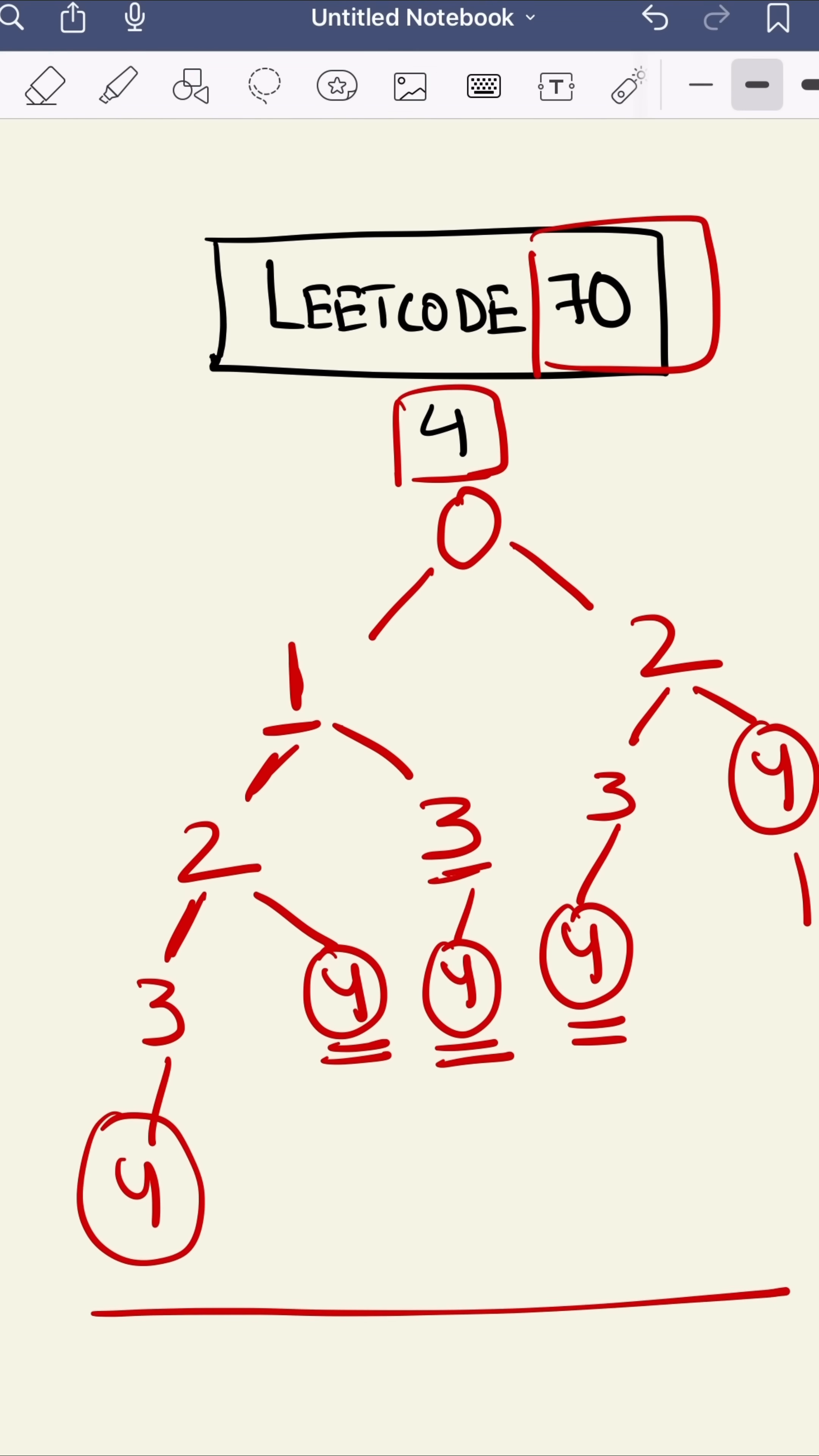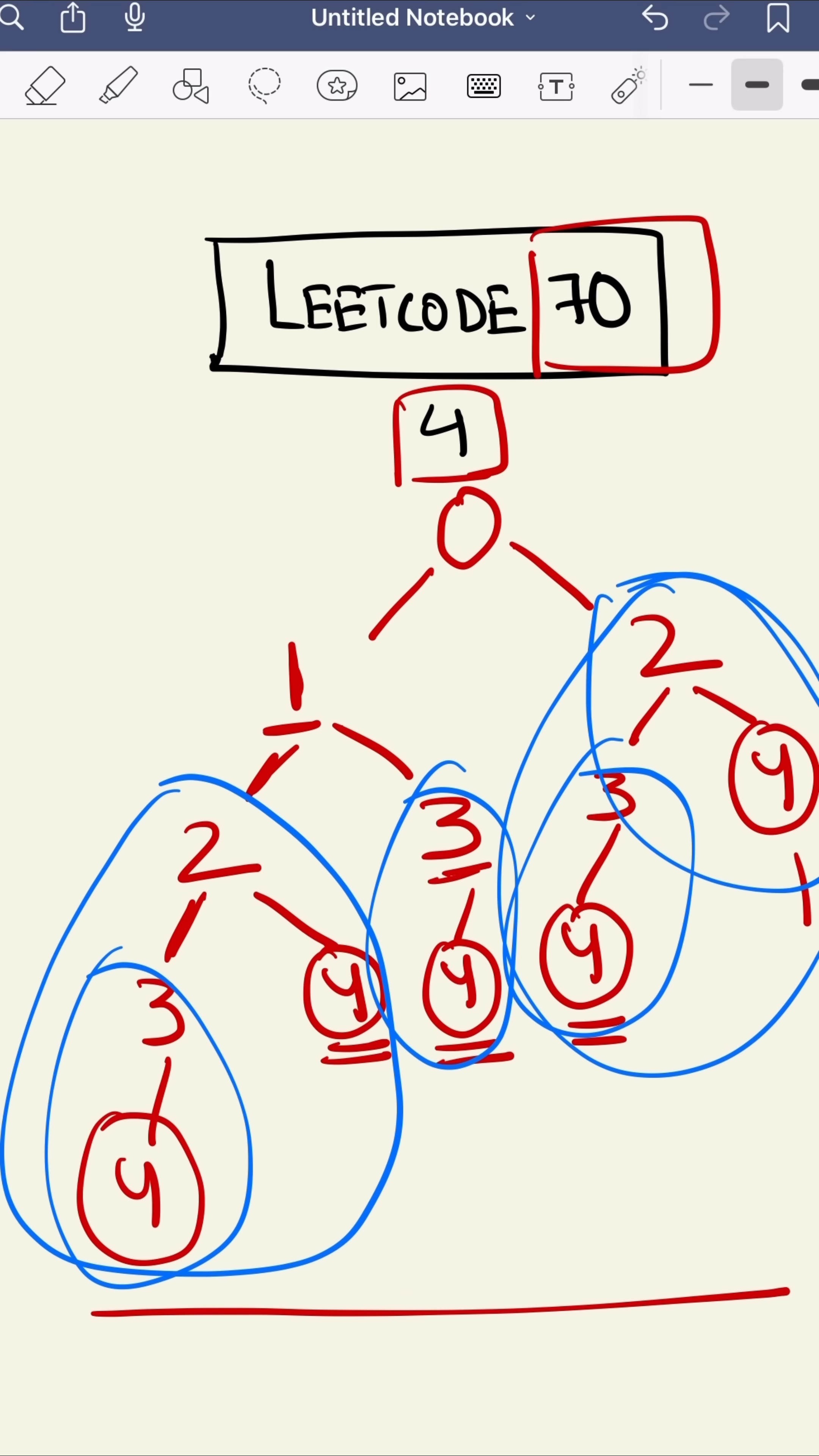But as you can see here, we have repeating patterns. See, this tree is equal to this tree. This three and four, this three and four, and this three and four are equal. Also, this two and four, this two and four are equal. So let's eliminate repetitive patterns.